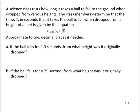A science class tests how long it takes a ball to fall to the ground when dropped from various heights. The class members determine that the time t in seconds that it takes the ball to fall when dropped from a height of h feet is given by the equation t equals 0.243 times the square root of h. Approximate to two decimal places if needed.